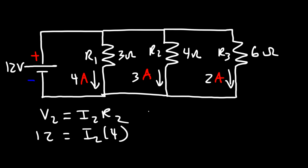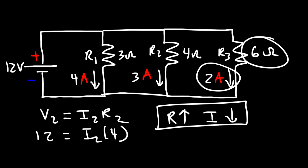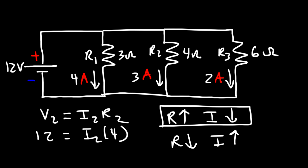Notice that as the resistance increases, the current decreases, as we mentioned at the beginning of this video. R1 has the lowest value and the highest current. R3 has the highest value but the lowest current. So as you increase the resistance, the current decreases — increasing to 6 ohms drops current to 2 amps. And if we decrease the resistance to 3, the current goes up to 4 amps, provided that the voltage is held constant. You'll see this relationship in both a parallel circuit and a series circuit.